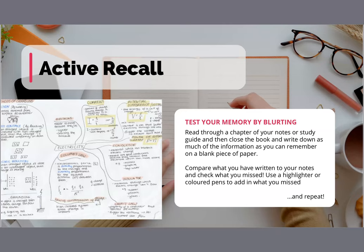Active recalling means that once you've skimmed through all your notes, you really have to test your knowledge. The best way to actively recall is by blurting the information you have read and learned onto a piece of paper. If you forget something, don't panic — just mark it out and make sure to revise it again. That will really help you check on things you have missed and ensure you don't forget them during your exam.